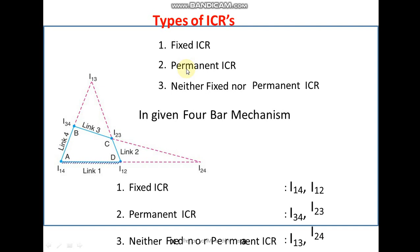Fixed ICRs are those ICRs which are referenced to the fixed link. Link number one is the fixed link. The links moving relative to link number one have fixed ICRs. Since link number one is connected to link number two, i12 is a fixed ICR — because out of links one and two, one is fixed. Similarly, link four moves with respect to link number one, so i14 is also a fixed ICR.